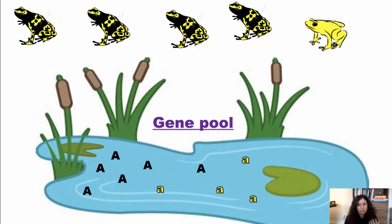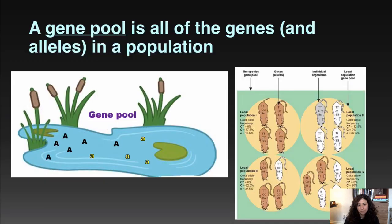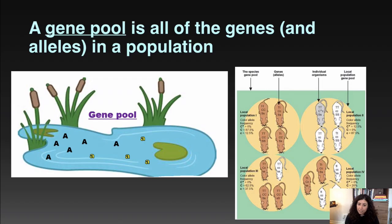This gives us the idea of a gene pool. A gene pool is all of the possible alleles in a population — all of the genes and alleles in a population. In our example we're talking about skin color, but of course frogs have many other genes, and their gene pool would include all the different alleles for all the different genes.